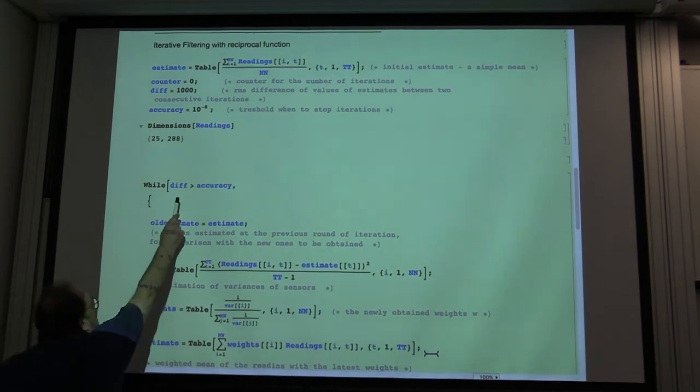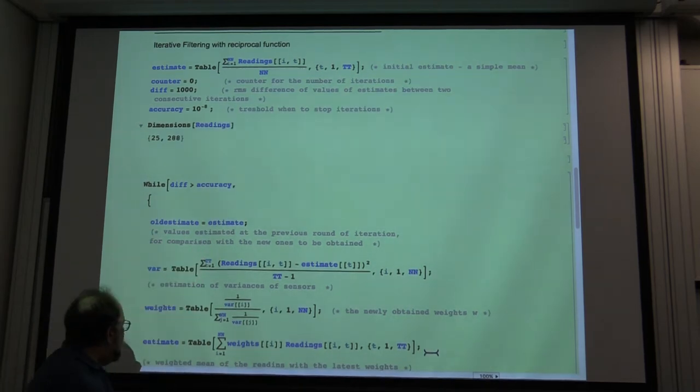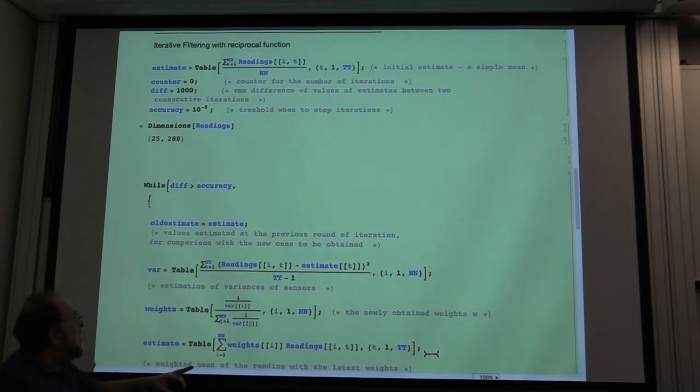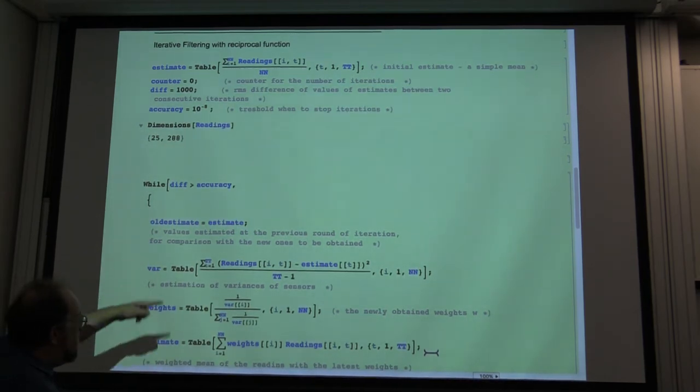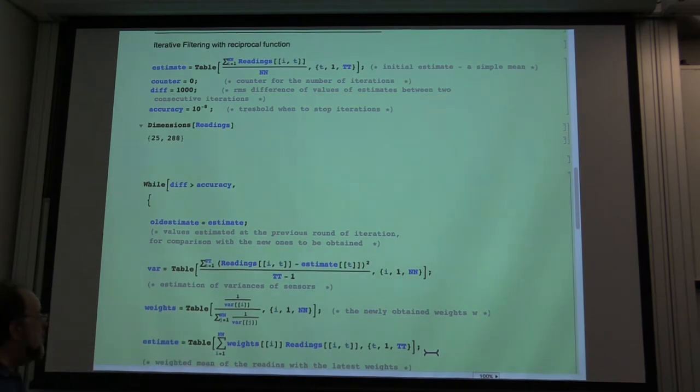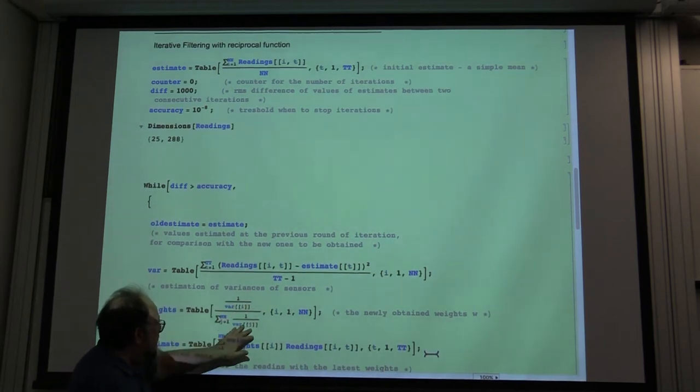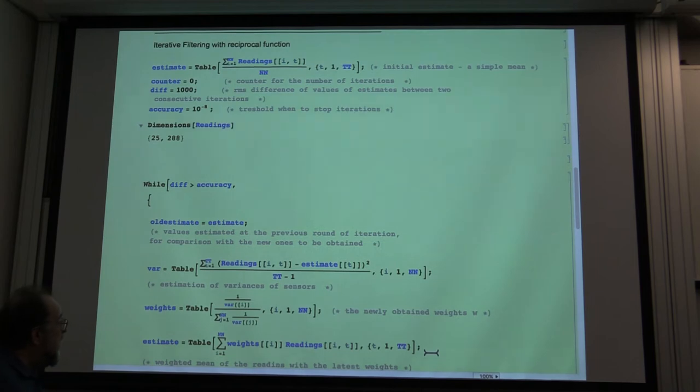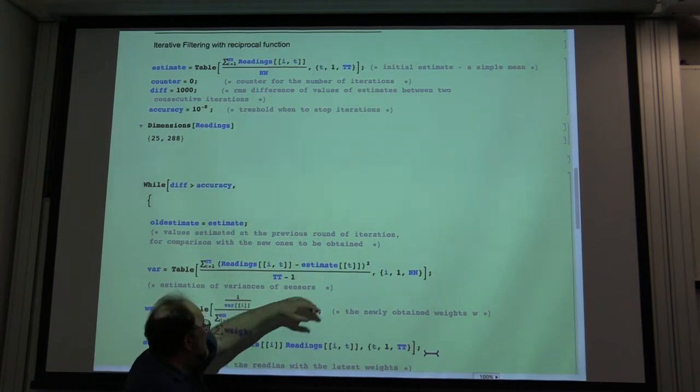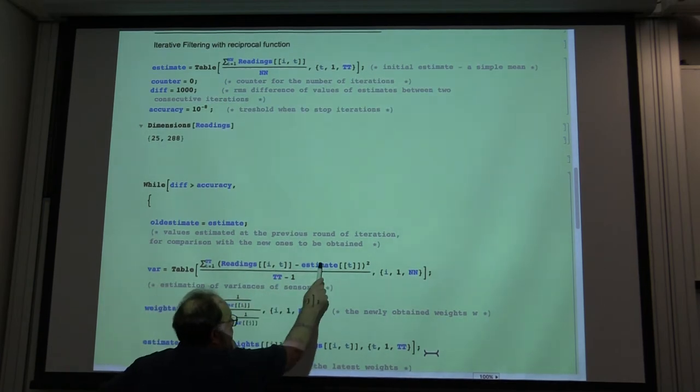So for as long as the difference between previous estimate and the new estimate obtained on this line is larger than the prescribed accuracy, which is 10 to the minus 8, you keep spinning. So you produce this pseudo maximum likelihood estimation with the weights that are reciprocals of the present estimations of the variances, which are just the Euclidean distance between the readings and the previously obtained estimate.